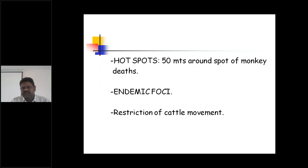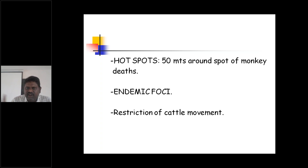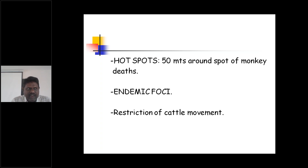You can see the hotspots. The goal is to find the hotspots in the entire forest. Because it is not possible to spray throughout the entire forest, we cannot spray carbaryl everywhere. So what is done is picking up specific hotspots in the forest area — for example, wherever there are dead monkeys. If dead monkeys are found at one place, the surrounding 50 meters is considered a hotspot.